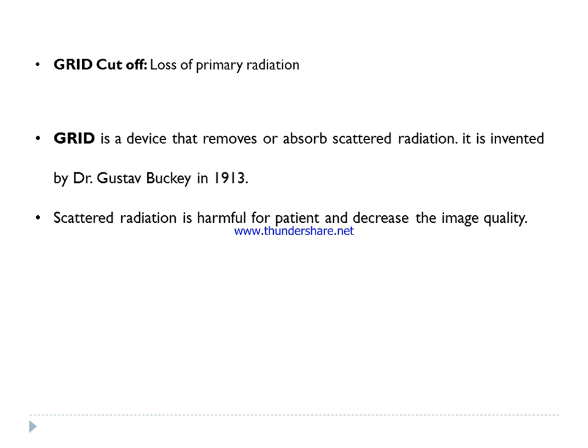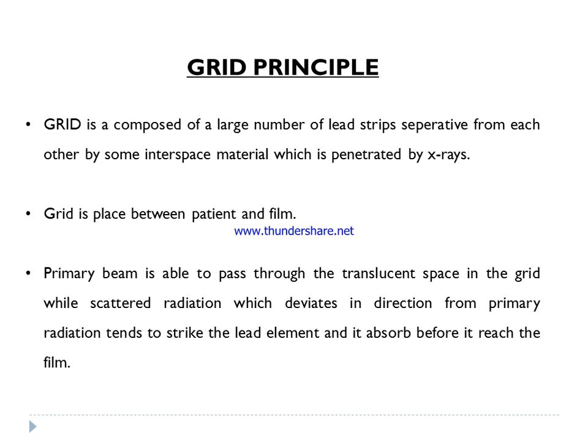One important term in grid is called grid cutoff. Grid cutoff is mainly defined as the loss of primary radiation. When primary radiation loss occurs, this phenomenon is known as grid cutoff. A grid is used to remove or absorb scattered radiation.